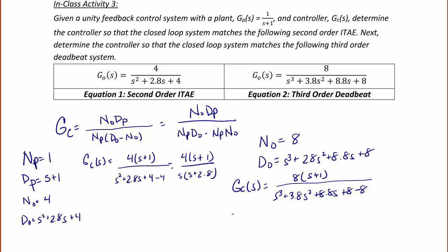And the controller simplifies to 8 times (s plus 1) over s times (s² plus 3.8s plus 8.8). This concludes today's lecture on Block Diagrams, Mason's Gain Rule, and Model Matching.